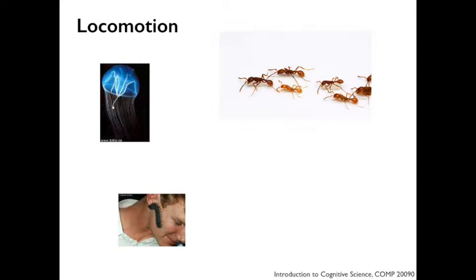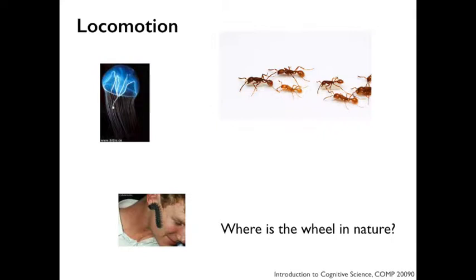Movement becomes an interesting object of study because it seems to be the behaviour for which nervous systems first evolved. The earliest nervous systems seem to serve the purpose of helping an animal to get around. Locomotion seems to have some similar basis whether we're talking about the pulsing of a jellyfish in the sea, the walking of an ant in the desert, or a caterpillar or a human. All these forms of movement share some underlying principles.